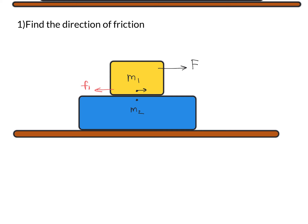Friction has equal and opposite reaction forces. If m2 exerts force F1 on m1, then m1 exerts an equal and opposite reaction force on m2 — that determines the direction of friction acting on m2. Because of this frictional force F1, block m2 will move towards the right. To find friction between m2 and the surface, consider two points: because of F1 this point moves right, so the surface exerts frictional force F2 towards the left on m2, and m2 exerts an equal and opposite reaction F2 on the ground.